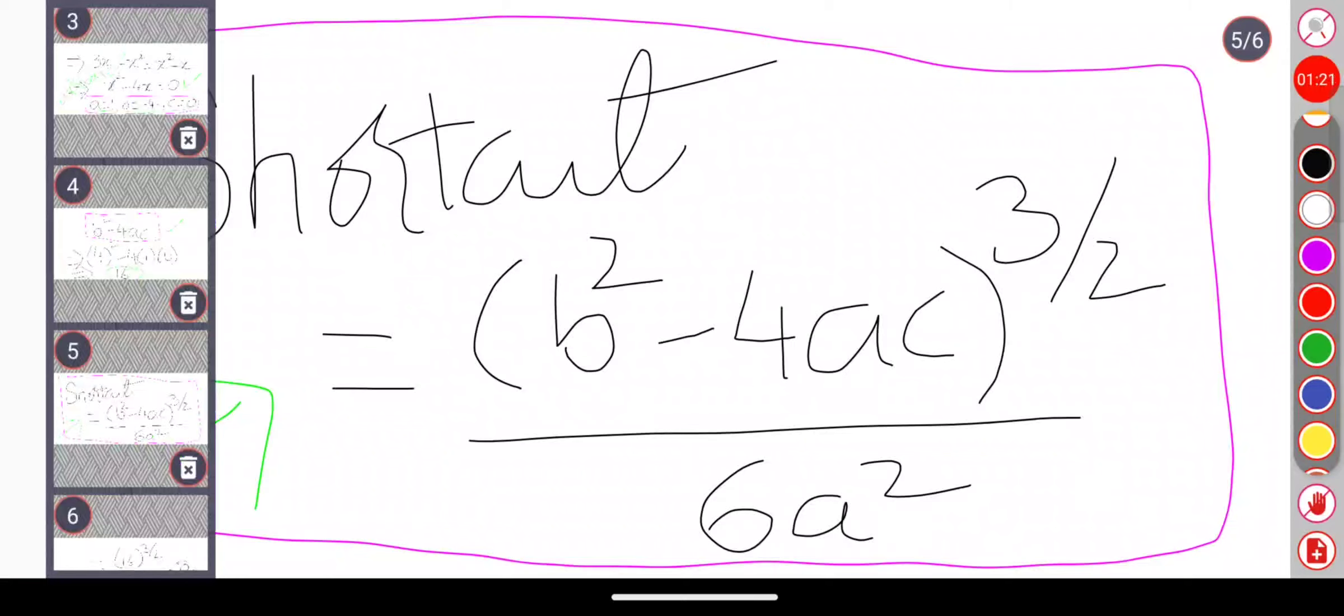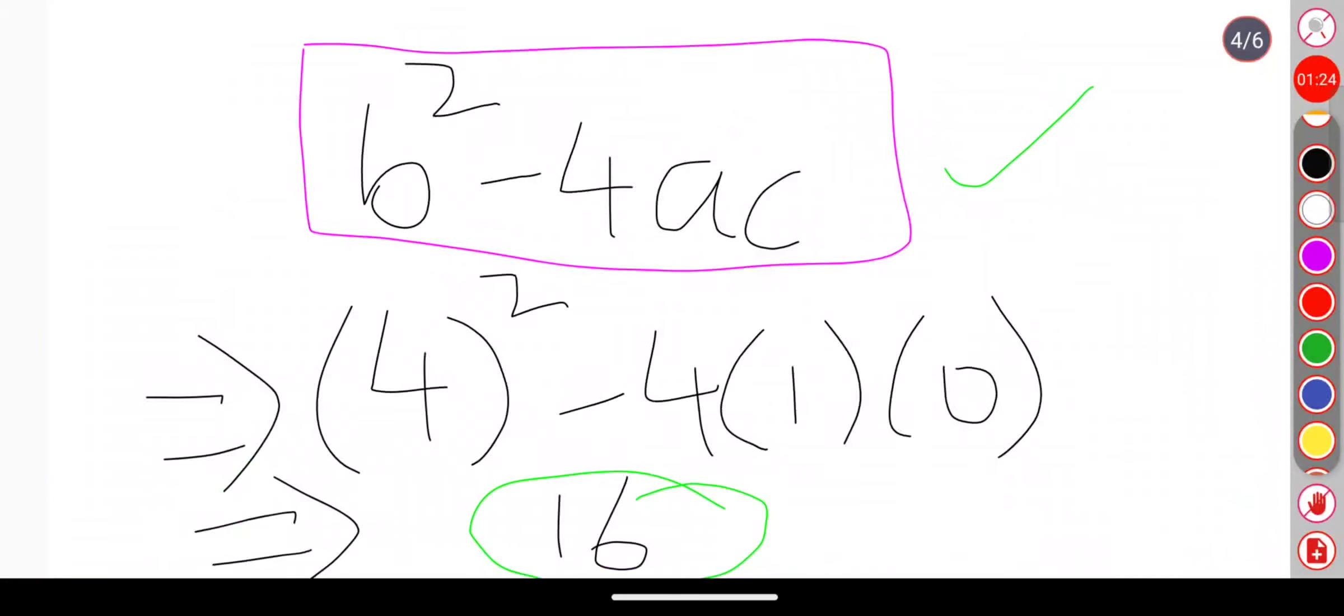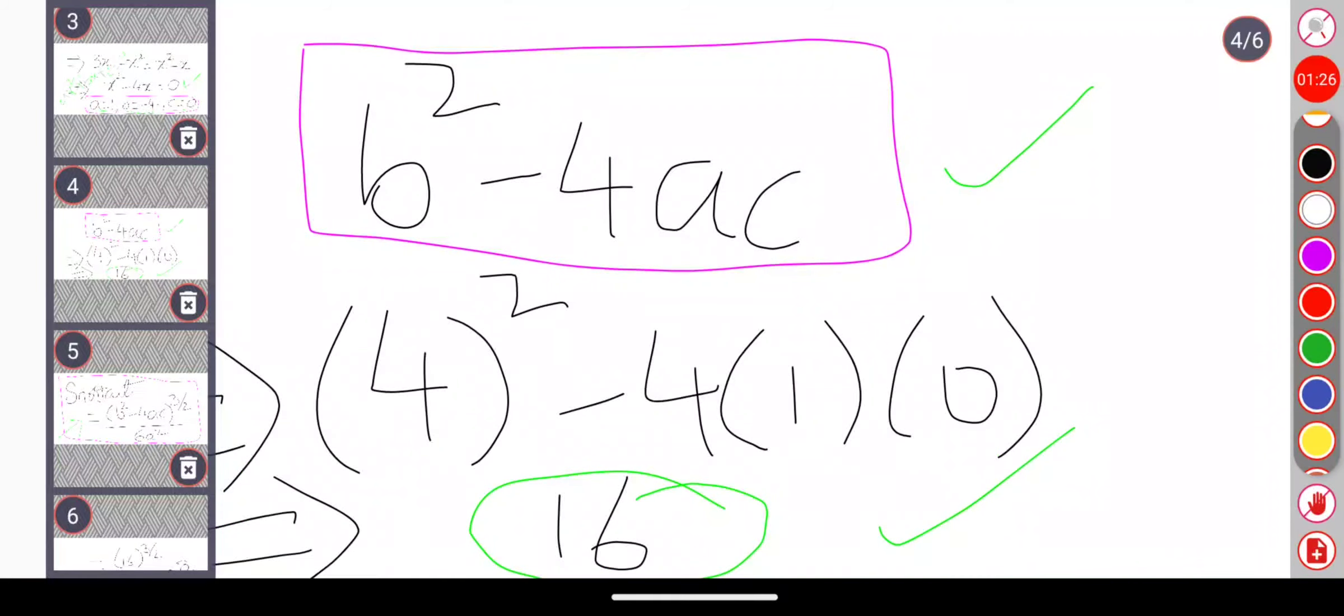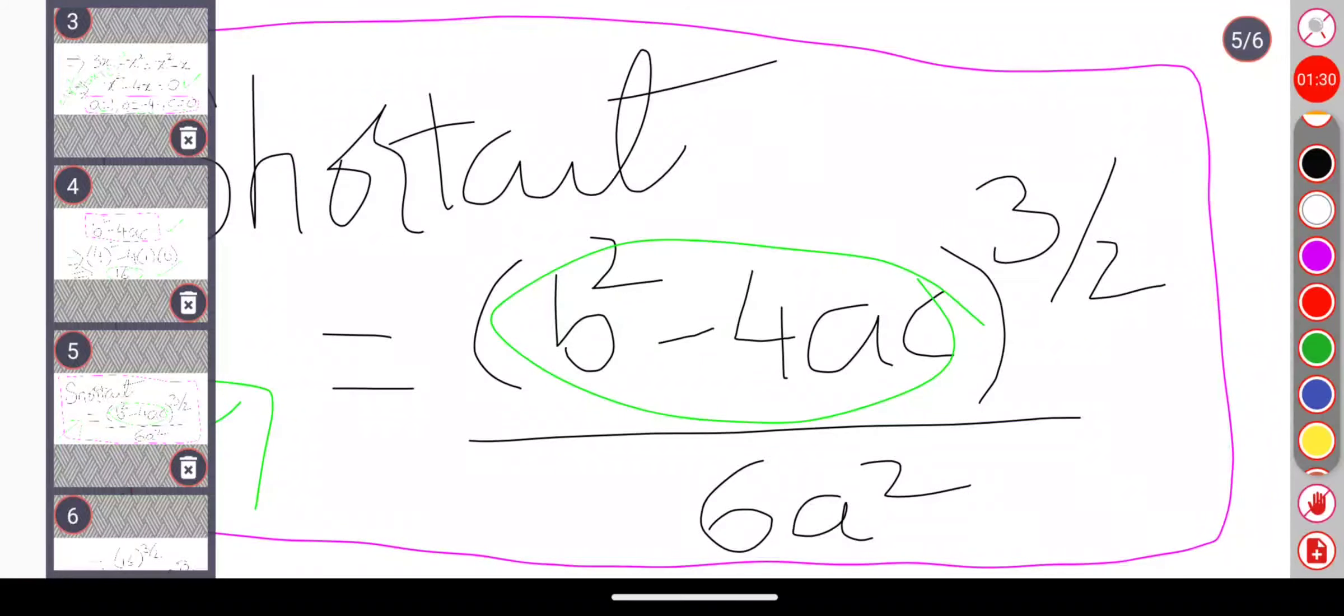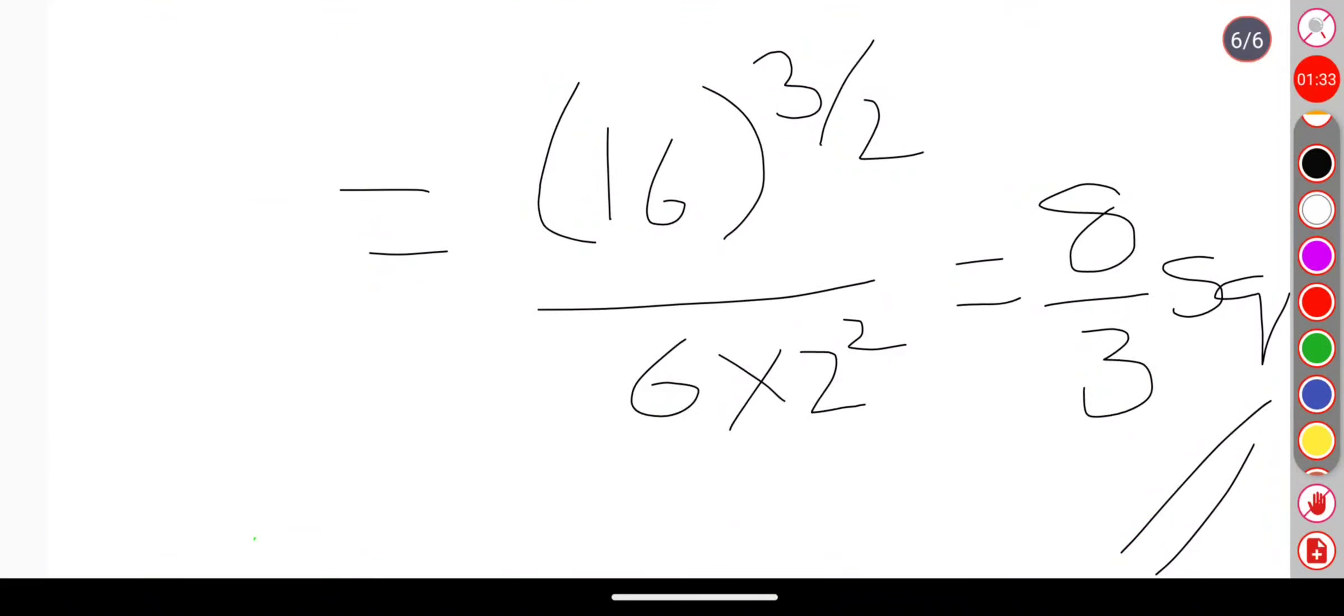So this value I will be substituting in this formula. The a value we already know is 1. So if I substitute those all values in this equation, I will be getting answer as 16 to the power of 3 by 2, divided by 6 into 2 squared.